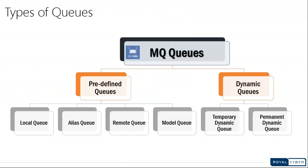There are different types of MQ queues: local queues, alias queues, remote queues, and model queues. If you have two applications hosted on the same server where MQ is installed, you can connect to the local queue where one application puts the message and another application picks the message from the queue.